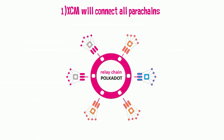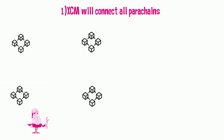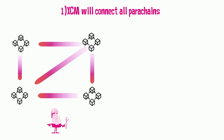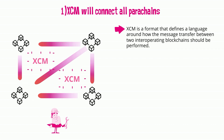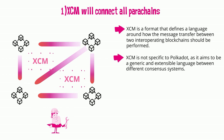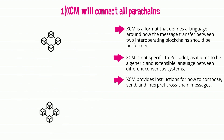Polkadot's architecture allows parachains — the diverse individual Layer 1 blockchains that run in parallel with the Polkadot and Kusama networks — to natively interoperate with each other, enabling cross-blockchain transfers of any type of data or asset. This is made possible through XCM, a format that defines a language around how message transfer between two interoperating blockchains should be performed. XCM provides instructions for how to compose, send, and interpret cross-chain messages.